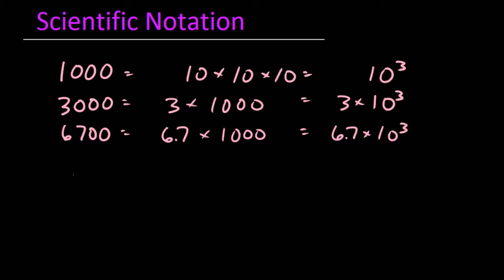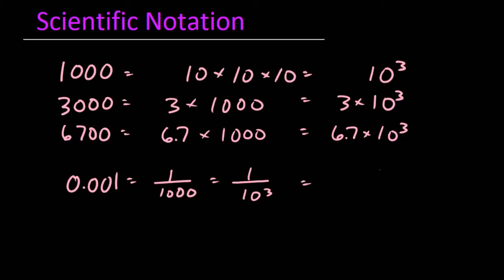Looking at a smaller number, such as 0.001, we would read it as 1 one-thousandth, so it could be written as 1 over 1,000. Since 1,000 is the same as 10 to the third, we could then write it as 1 over 10 to the third, which would be the same as writing it as 10 raised to the negative third power.